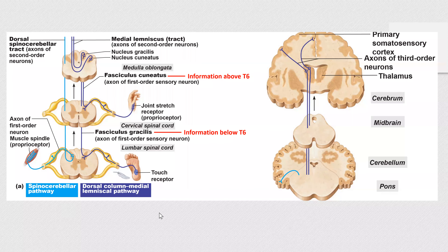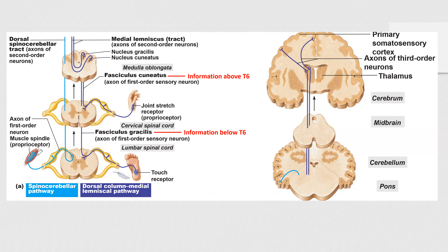Another pathway is the spinal cerebellar pathway — from spinal cord to cerebellum. Information from your muscles goes to your spinal cord, moves up, and then terminates in the cerebellum — it doesn't go all the way to the thalamus. It actually decussates twice, so information from the right muscles will be received by the right hemisphere of the cerebellum — it stays on the same side.